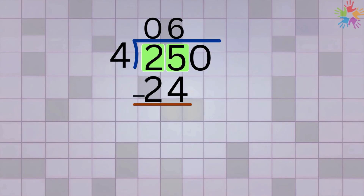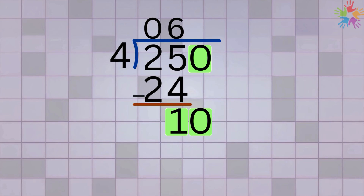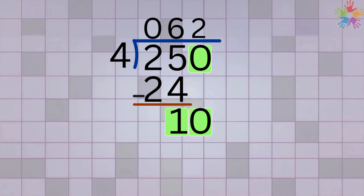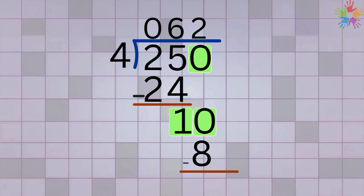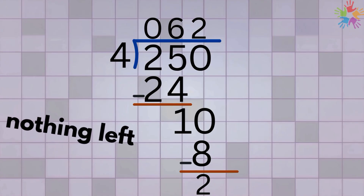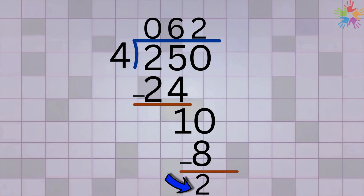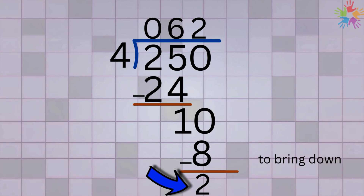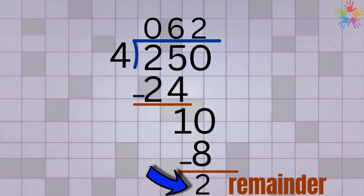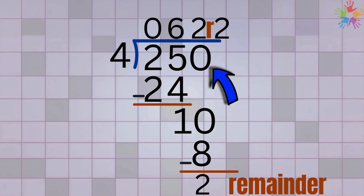We multiply: 6 times 4 is 24. Subtract: 25 minus 24 equals 1. We bring down the last digit, 0, giving us 10. We ask: how many times does 4 go into 10? Two times, because 4 times 2 is 8. We write 2 on top, multiply: 2 times 4 is 8, subtract: 10 minus 8 equals 2. We've run out of digits with 2 left over — that's our remainder. We write it at the end using the letter R, so 250 divided by 4 is 62 remainder 2.